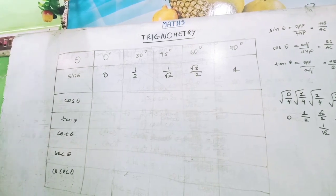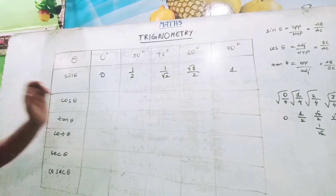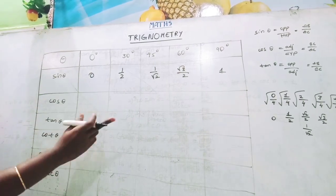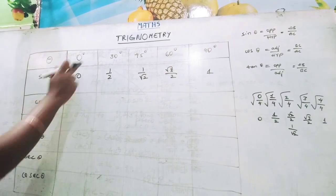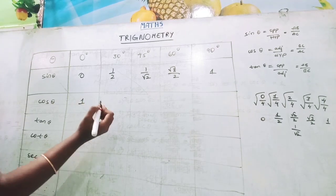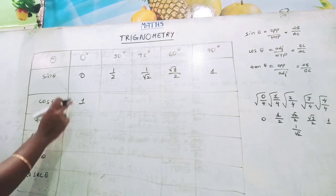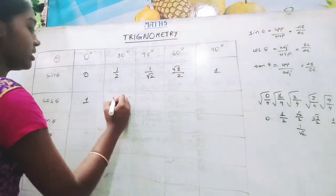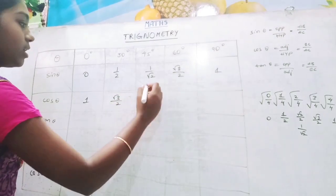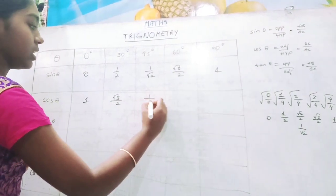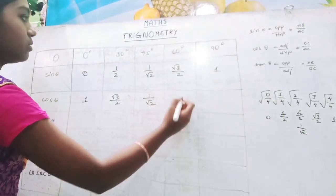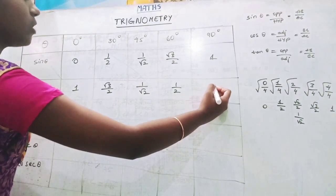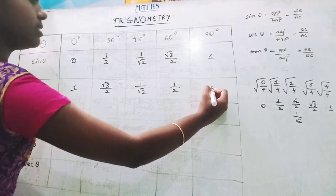As sin theta becomes reciprocal of cosec theta, the value of cos 90° equals sin 0°. So cos 0° = 1, cos 30° = √3/2, cos 45° = 1/√2, cos 60° = 1/2, and cos 90° = 0.